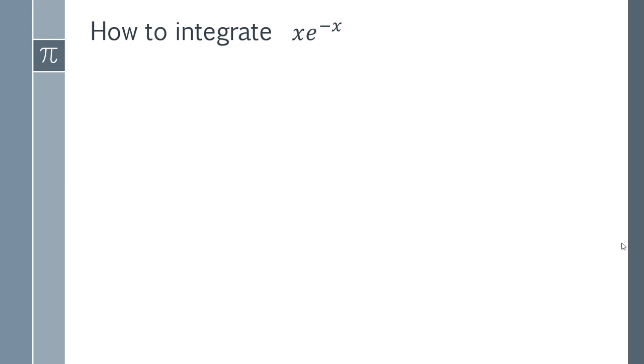In this video I'm going to run through how you can integrate x times e to the minus x. So we have our integral there and we have to first realize that you have two things being multiplied together.